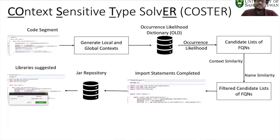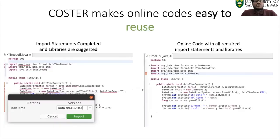Those FQNs are used to complete the import statement and also to suggest the libraries. So CoStor makes online code easy to reuse by completing required import statements and libraries.